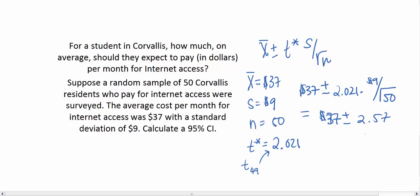So this gives us a 95% confidence interval of $34.42 to $39.57. Of course, I should put units on this, so I'm going to put a couple of dollar signs in there. A little bit messy, but you get the point.